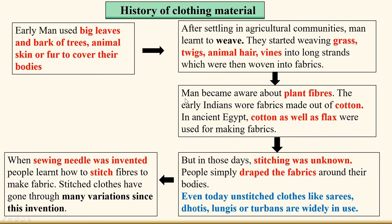Before completing this chapter, let's take a quick look at the history of clothing material. Early man used big leaves, bark of trees, animal skin, or fur to cover their bodies. But after settling in agricultural communities, man started to weave — weaving grass, twigs, animal hair, and vines into long strands, which were then woven into fabrics. Then man became aware of plant fibers.